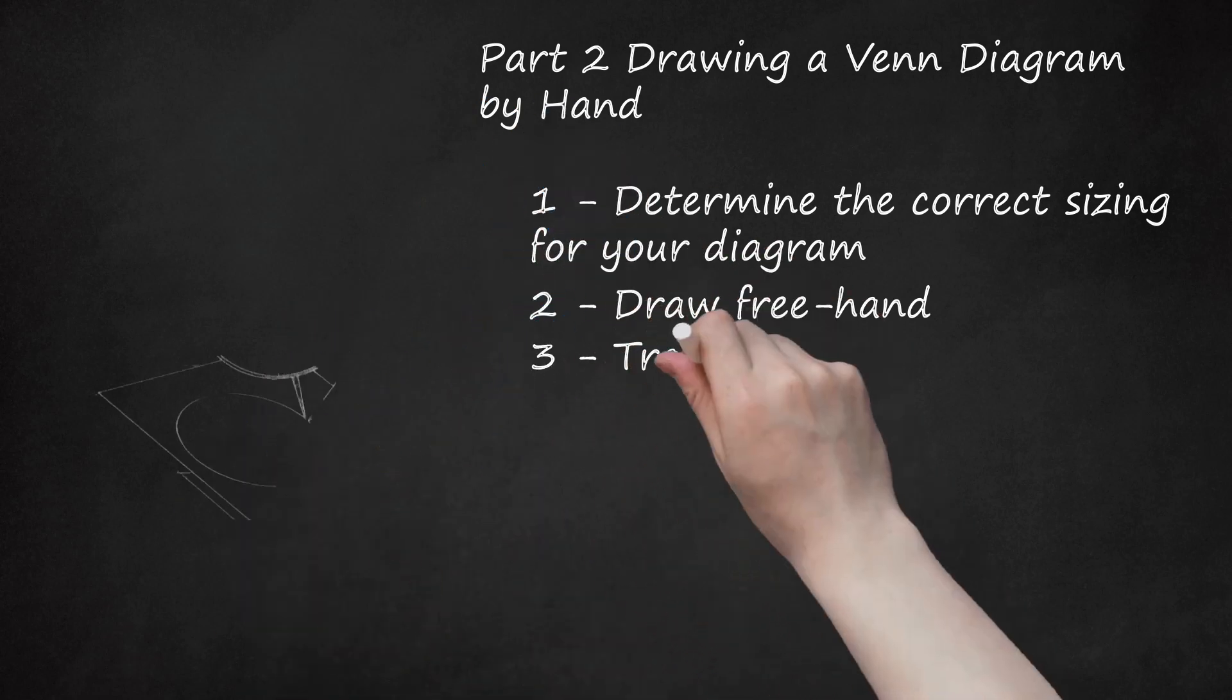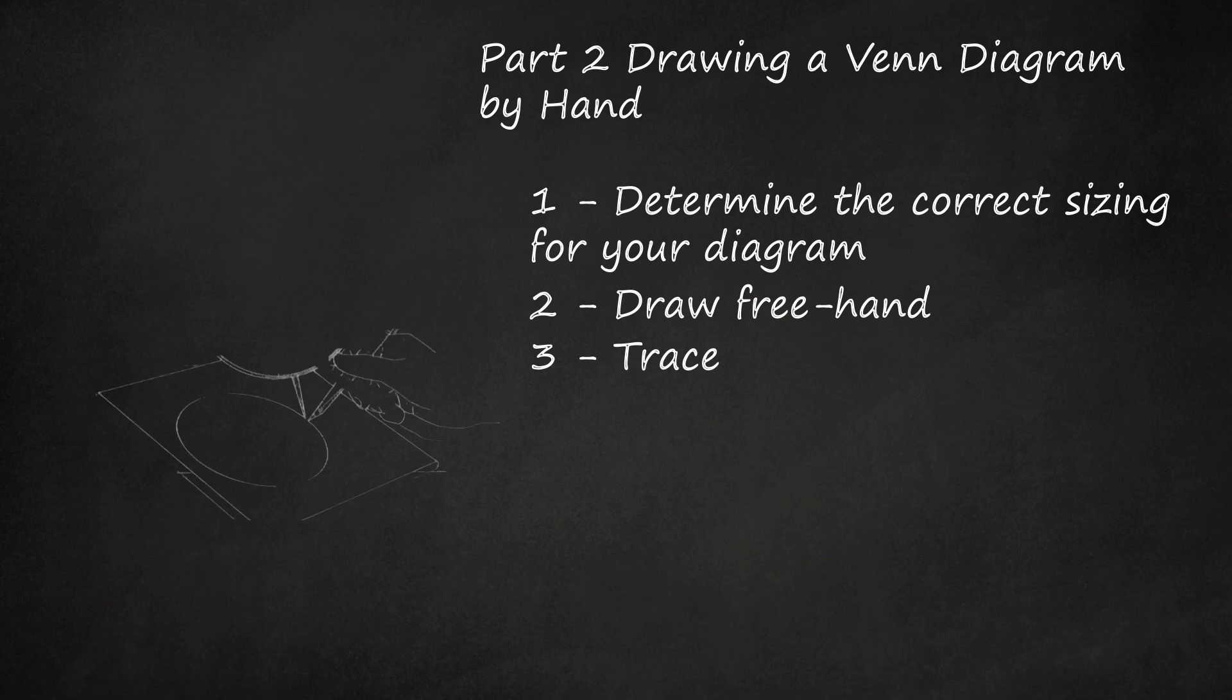Step 3: Trace. First find a guide. A roll of masking tape, a cookie tin, a coffee can, or some other flat, bottomed, circular container is ideal.